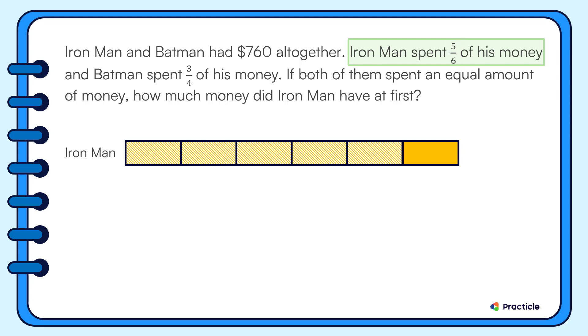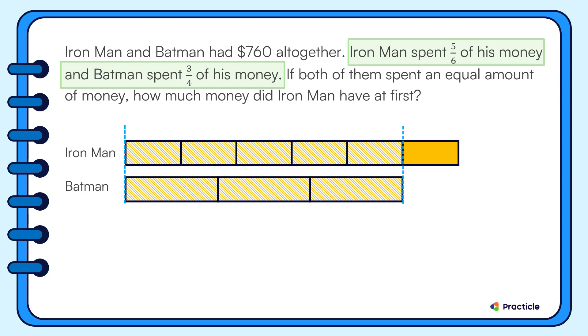Next, we're going to draw Batman's money. Five-sixths of Iron Man's money is the same amount as three-quarter of Batman's money. This means that five of Iron Man's units has to be as long as three of Batman's units. So let's draw three units for Batman first. This is the amount of money that he spent. Now that we've drawn three units, we know how long one of his units is.